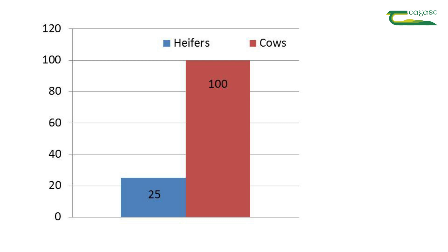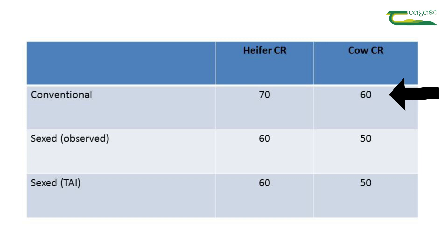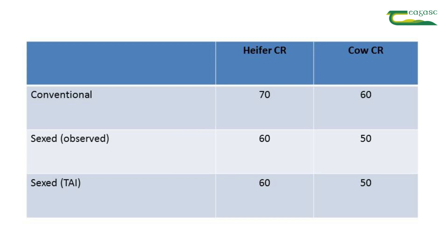We're assuming this is a well-managed herd that achieves good fertility performance normally. With conventional semen, heifers would get conception rates of 70% and cows 60%. From trials in Ireland and other countries, sex semen conception rates are poorer on average — heifers back to 60% and cows back to 50%. That same reduction in fertility applies whether based on observed heat or fixed-time AI.